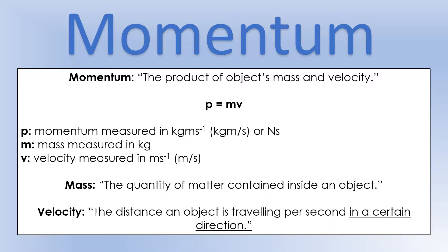Momentum has two different units. We can give it a unit of kilograms meters per second because it's mass times velocity, but it also can have the unit of Newton seconds — and fundamentally those two units are identical. Mass is measured in kilograms, velocity in meters per second.